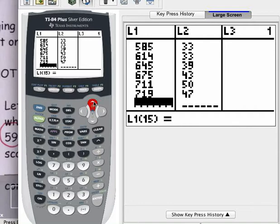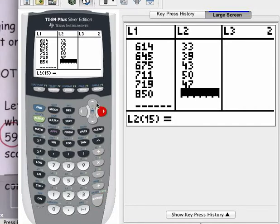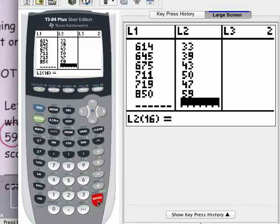So I'm going to enter an 850 into list 1. That represents powerboat registrations, and then I'm going to associate that 850 with 59 manatee deaths. We will put that into list 2. That is where the manatee deaths go. So we have added a new value to this data set.